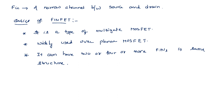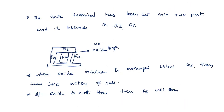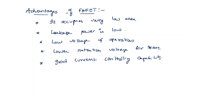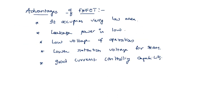Some important basics of FinFET: it is a type of multi-gate device, meaning there are more than one gate. The fin cuts the gate into two parts, so the minimum number of gates available is two. If any oxide gate is not provided, then gate 3 will be available. If an oxide gate is there, then gate action will not occur. It can be widely used compared to the planar MOSFET.